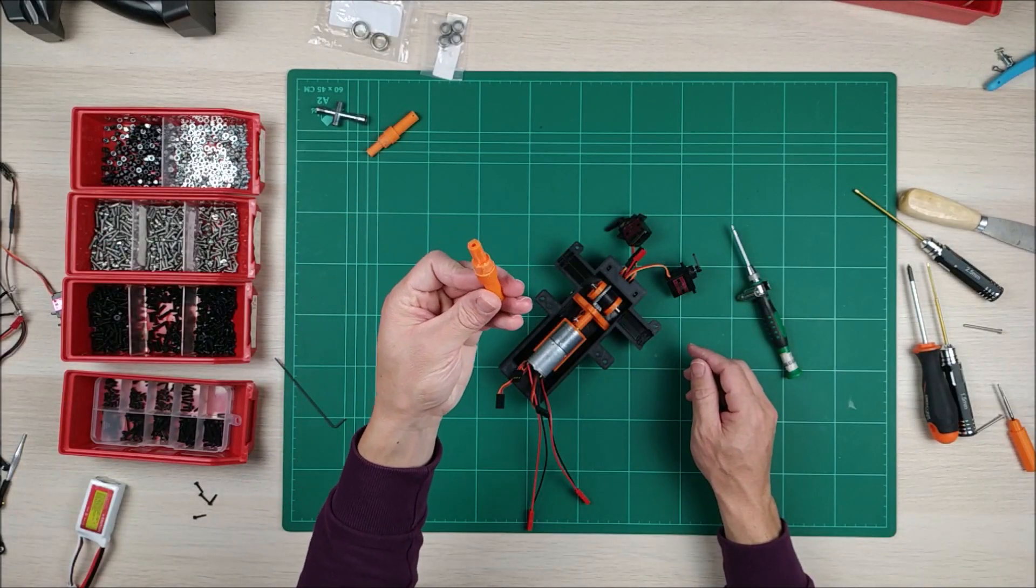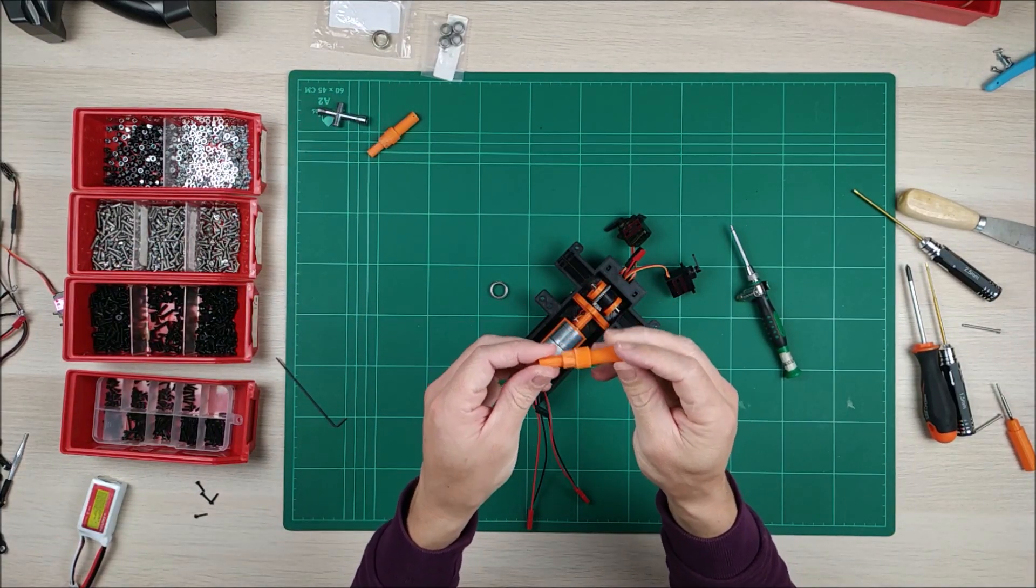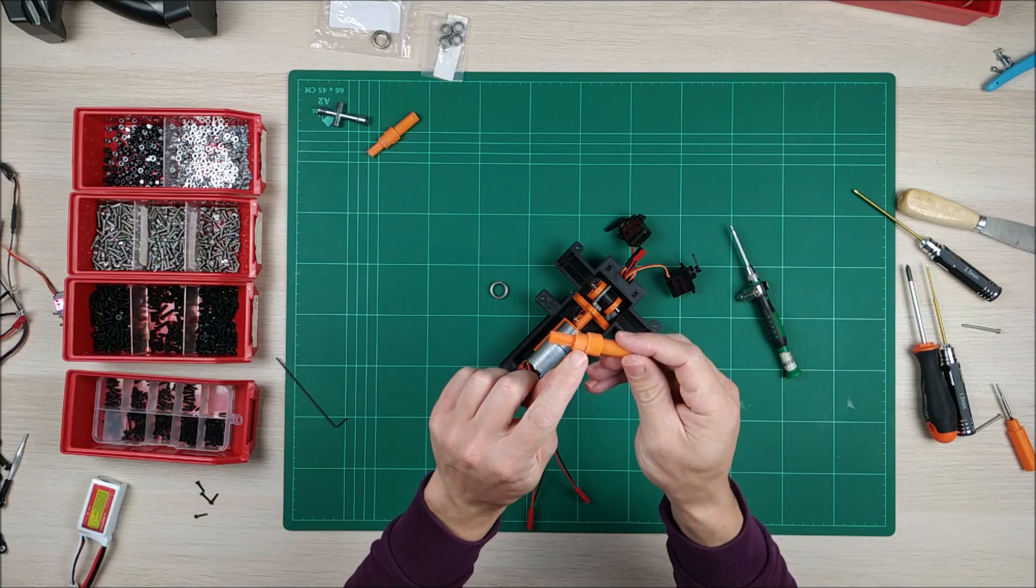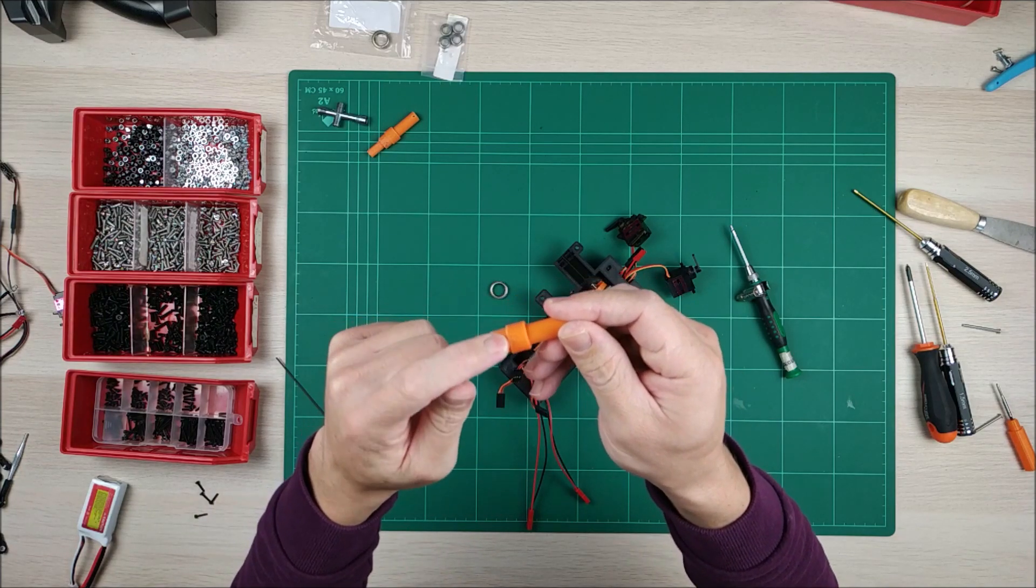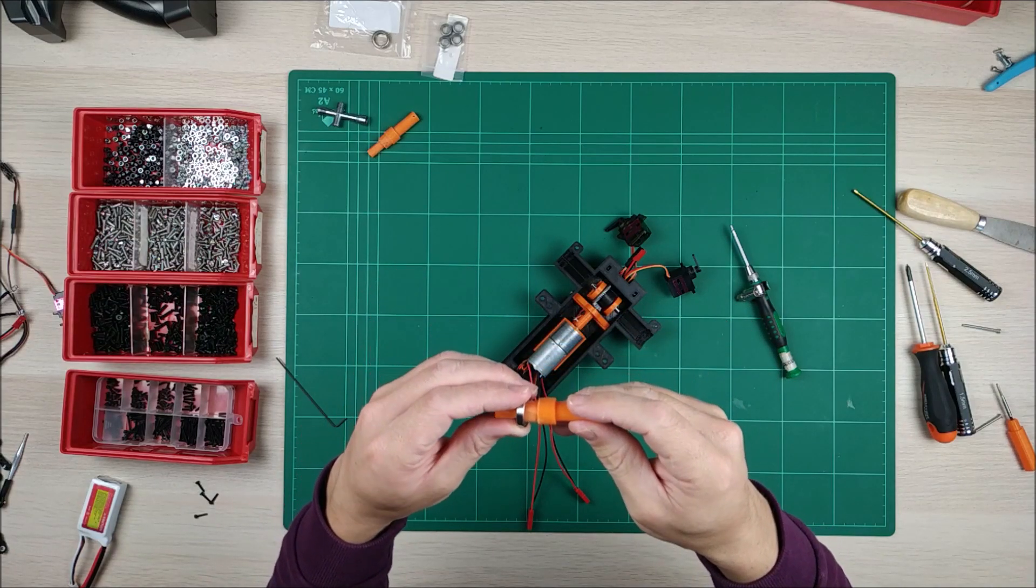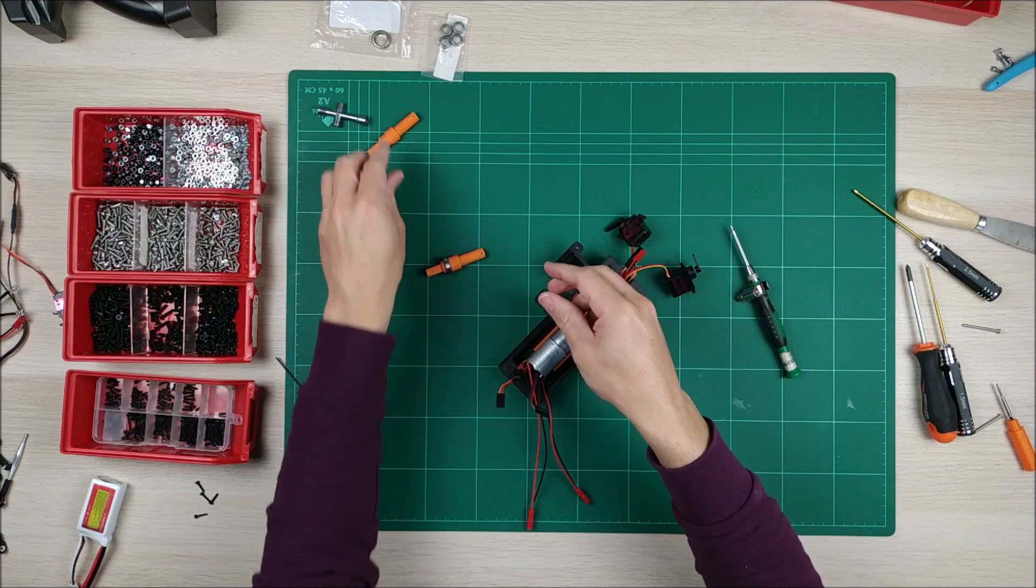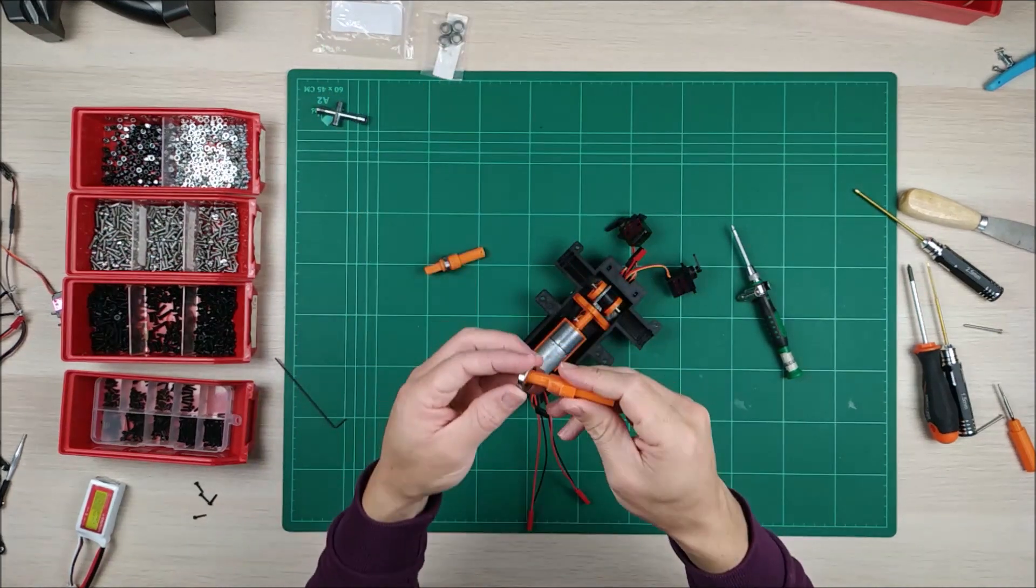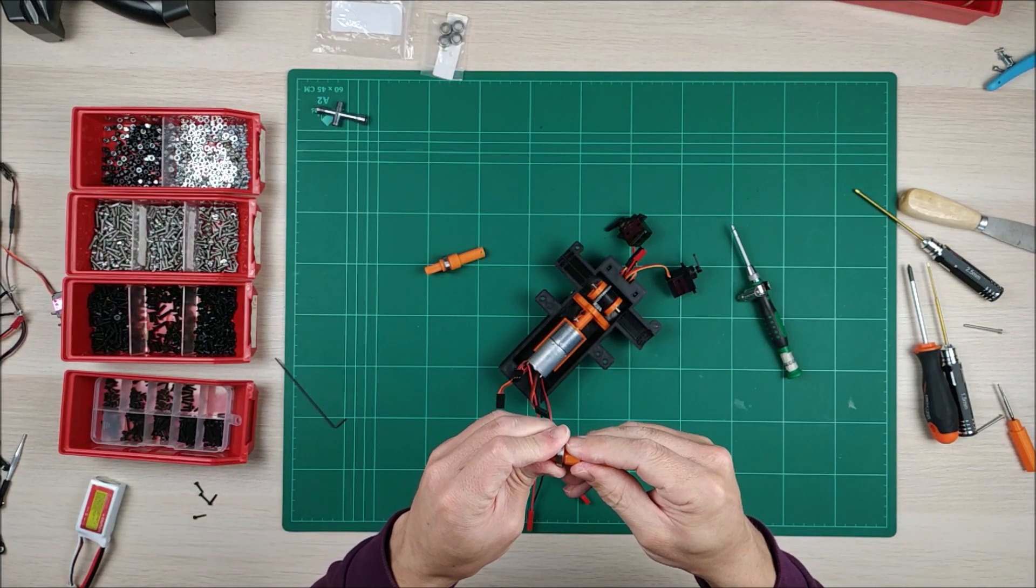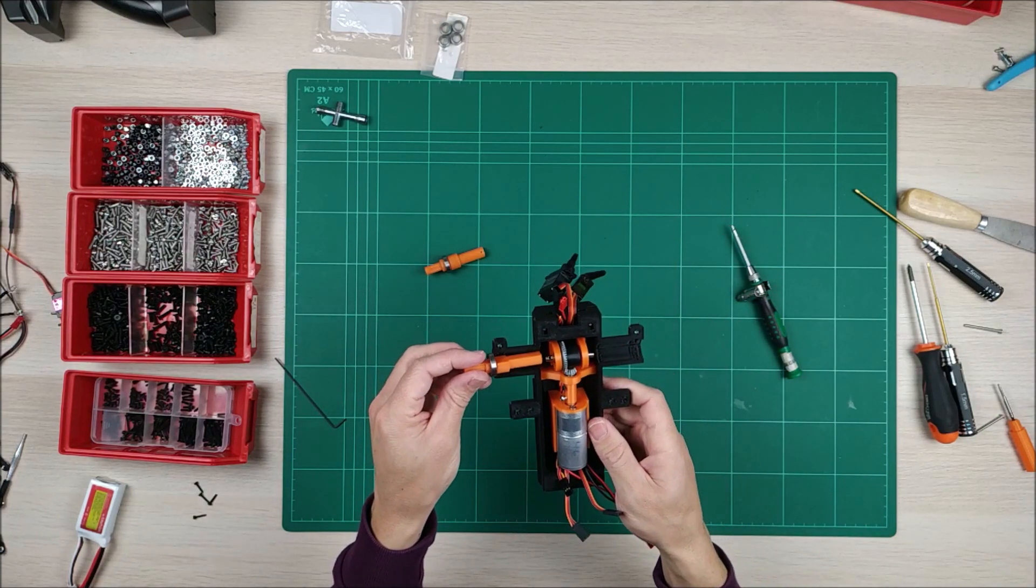Now we're going to insert the axles. So first we may need to trim or sand a little bit here. I already did that. So now it's going to fit perfectly here. And also this one, like this.